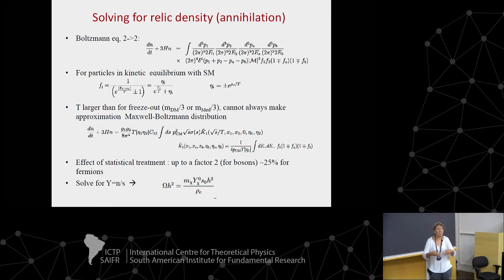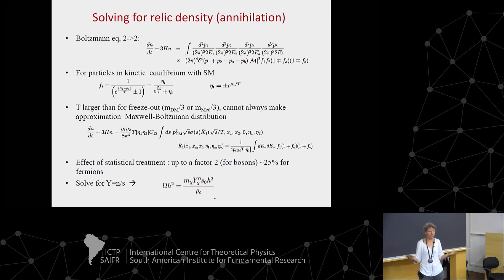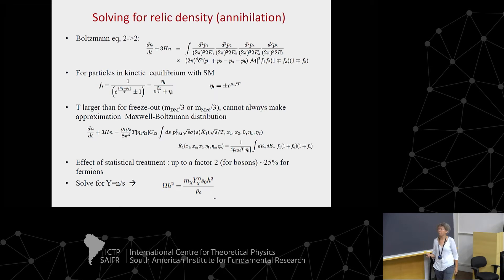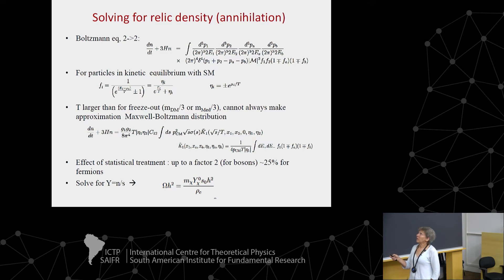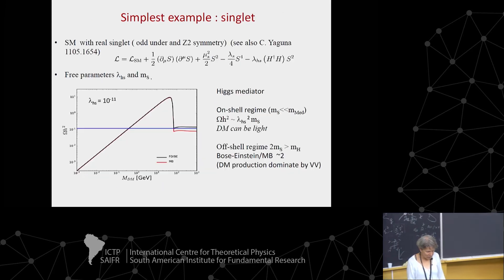Any standard model particle — any particle that is at least weakly coupled and interacts with the standard model — is in thermal equilibrium and has this Fermi-Dirac or Bose-Einstein distribution. Solving this equation is typically done in terms of the abundance, and this leads as usual to the relic density. So what about numerically?